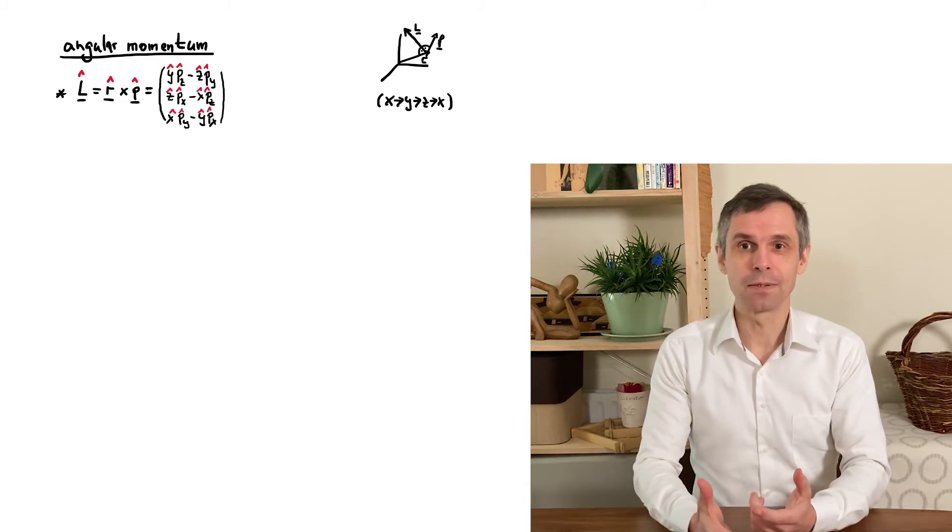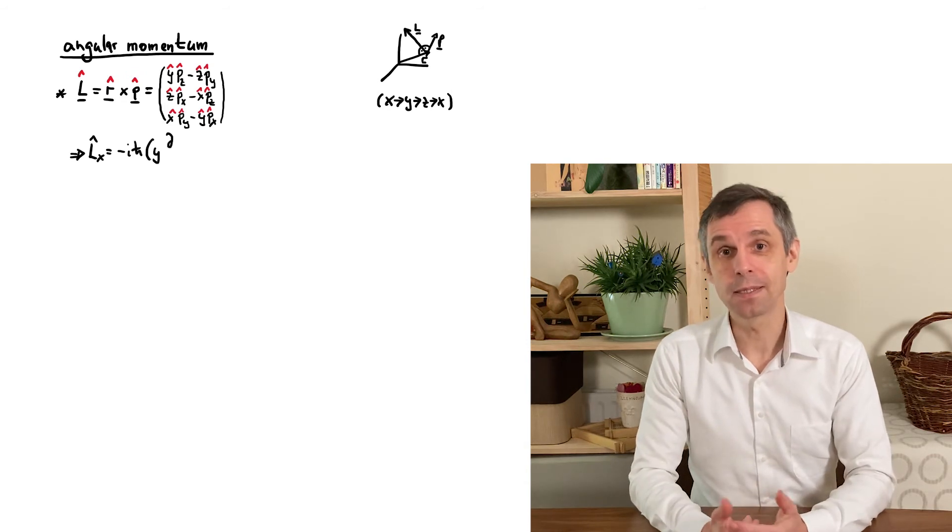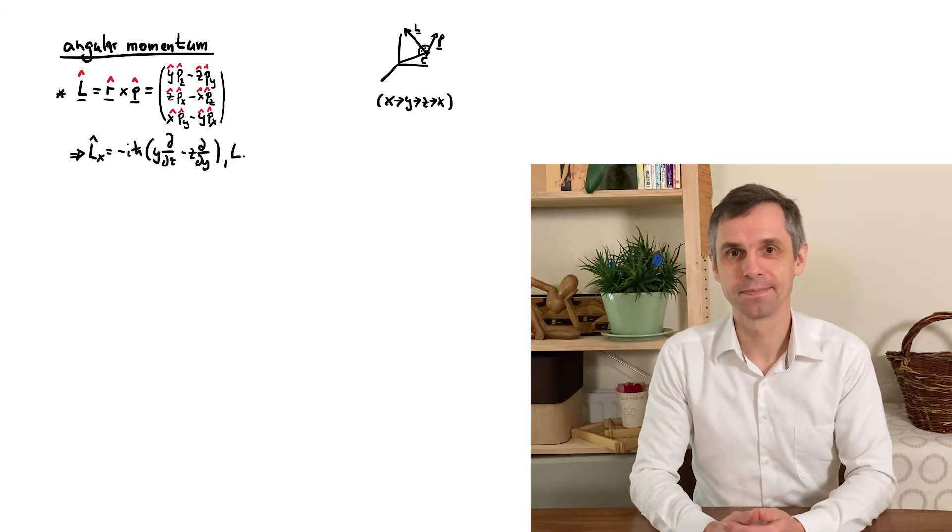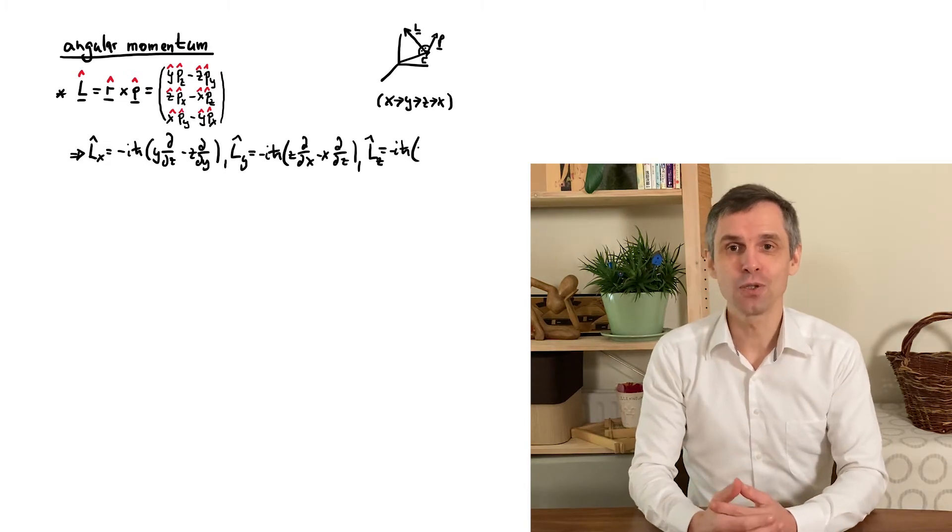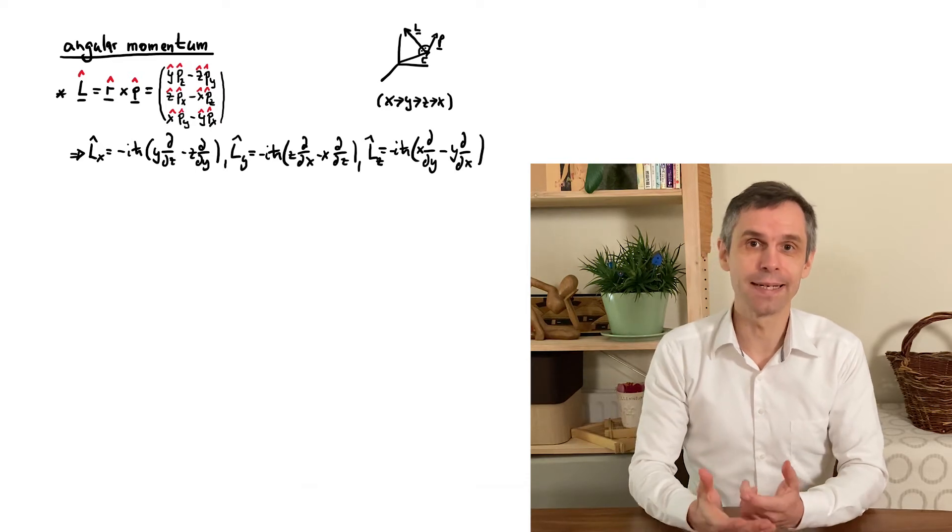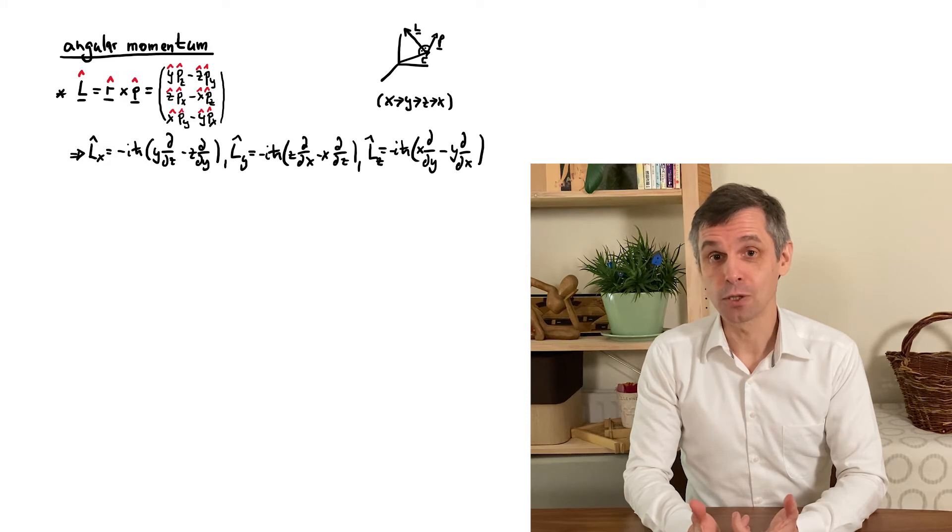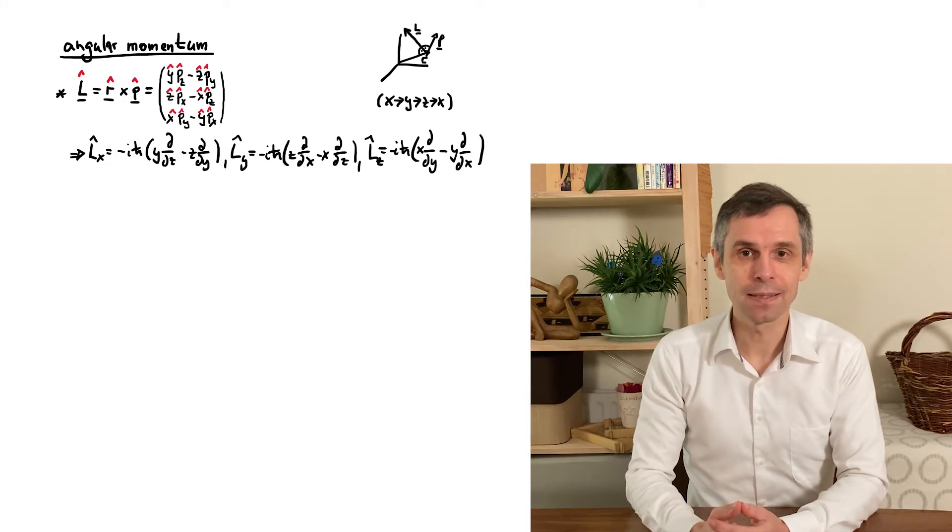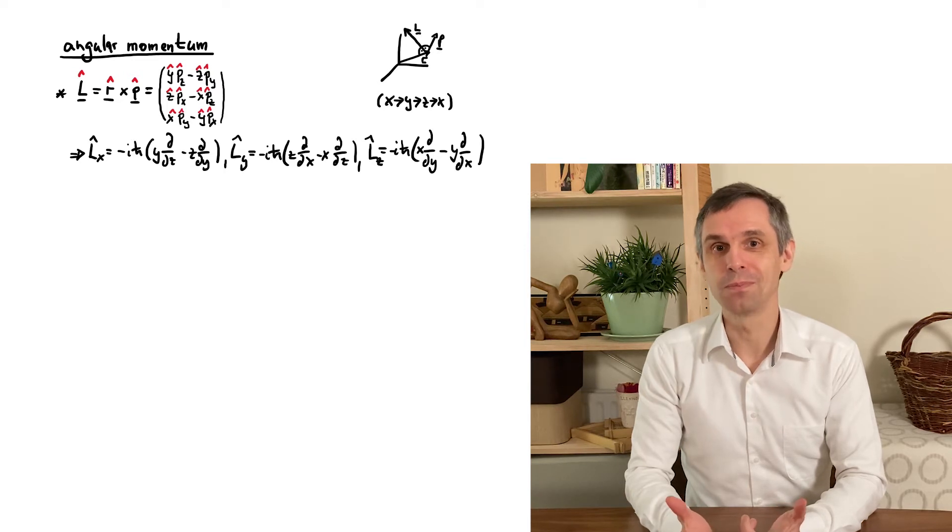So with this, we can write down the explicit form of three operators, one each for each component of angular momentum. They are all Hermitian, so qualify as observables, and indeed turn out to be the physical observables for angular momentum. And what is really nice is that we managed to write them down in Cartesian coordinates, so can do all our calculations with them without needing to resort to spherical polar coordinates.